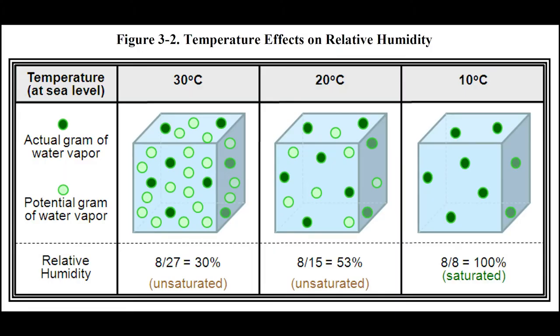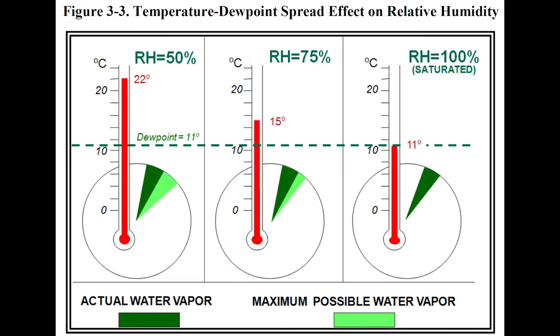Figures 3-2 and 3-3 show graphically how dew point versus temperature relate to relative humidity. If the dew point is 11°C and temperature is 22°C, relative humidity is 50%. If dew point is 11°C and temperature is 15°C, relative humidity is 75%. And if temperature and dew point are both 11°C, relative humidity is 100% — the air is saturated. It's probably raining or foggy, and not friendly to be out in.